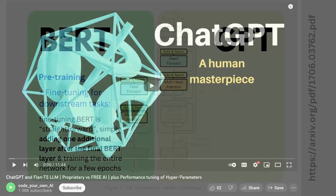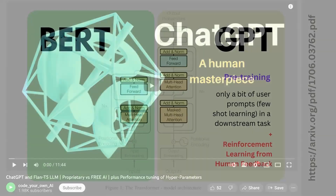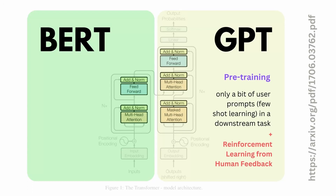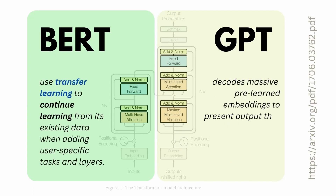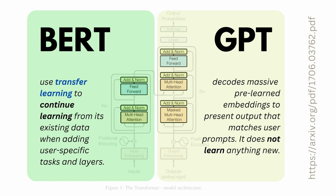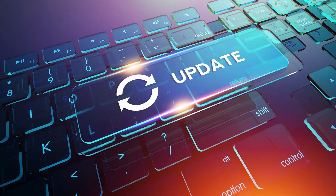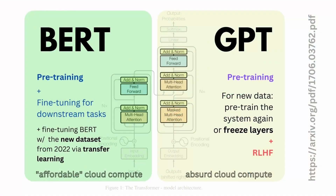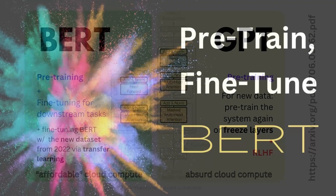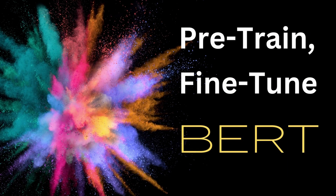And it is so easy to fine-tune BERT. Now, if you have GPT, it is not easy to fine-tune. In any case, you have some massive pre-learned embeddings and that's it. This is why the pre-training size is so huge with GPT. So therefore, if you want to update the system in BERT, it is easy — you just add a fine-tuning task. But with GPT, it is an absurd cost in cloud computing.